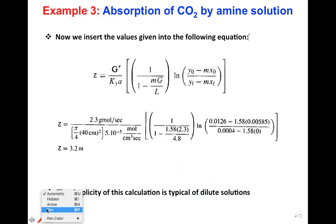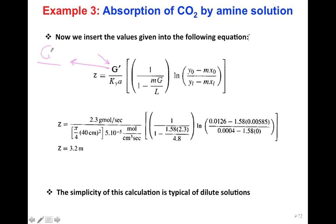Here is the Z equation. One important note: this equation was written incorrectly in the original notes. The updated presentation is available on D2L. If you are using a hardcopy, correct G in your slide to G prime. G prime is G divided by A, the cross-sectional area.